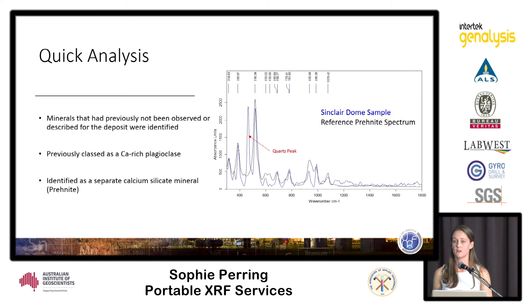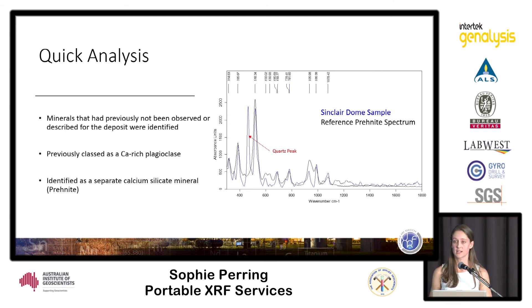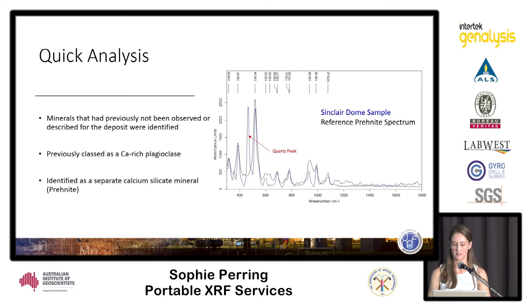Another good example of where spectroscopy complements and supports a geologist in the field: while collecting a lot of the scans, we noticed there were several spectra that were not described by the mineral library we had compiled. We were actually seeing a mineral that was not originally reported or expected for this deposit. Through more robust investigation, we were able to identify this as a calcium-rich mineral which previously had just been allocated to calcium-rich plagioclase. While this might not be fundamentally groundbreaking for this particular deposit, it demonstrates what spectroscopic analysis can add on top of the geologist log where you might have minerals that are visually very similar, further developing your understanding of the mineral system.